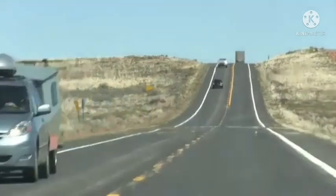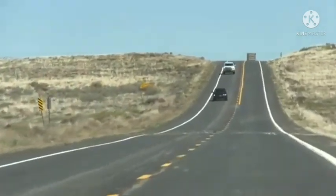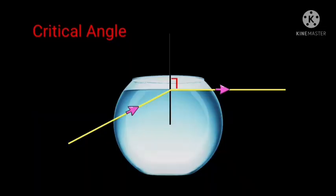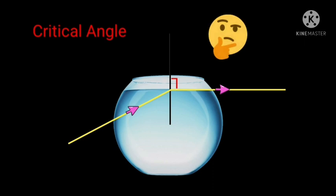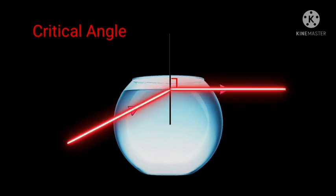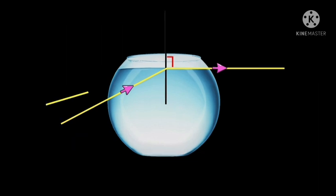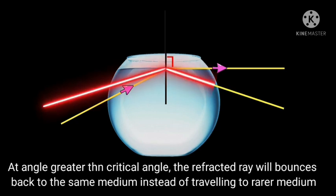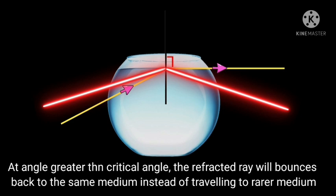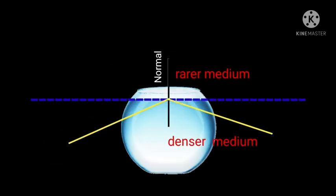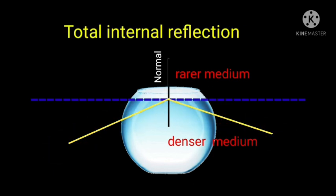In my previous video I explained about critical angle in detail. If you remember, critical angle is the incident angle at which the refracted ray passes parallel to the boundary. Now when the incident angle is greater than the critical angle, the ray bends further and bounces back to the same medium instead of traveling to the rarer medium. This phenomenon is called total internal reflection, and it's the main reason behind the formation of mirages.